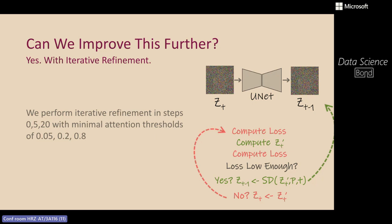Regarding the correlation between number of subjects and number of refinement steps: we also have a limit on iterations to avoid infinite loops, since some prompts are simply not feasible for the model. It does depend on the number of subjects, but also on their nature. For natural prompts like 'a dog and a cat,' iterative refinement is rarely needed because attention values are high enough from the original process. The more creative or out-of-distribution the prompt, the more iterative refinement steps are needed. So it's more about the type of subjects than just the number.